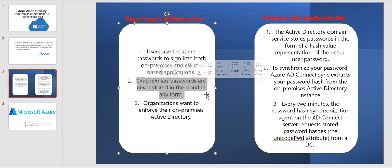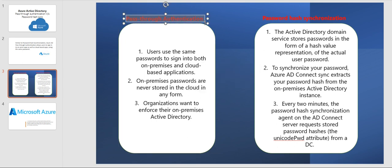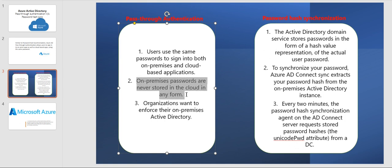Now the difference: with pass-through authentication, on-premise passwords are never stored in the cloud in any form — not even in encrypted form. The password is stored only on-premises, never in the cloud. That is the main difference between pass-through authentication and password hash synchronization.